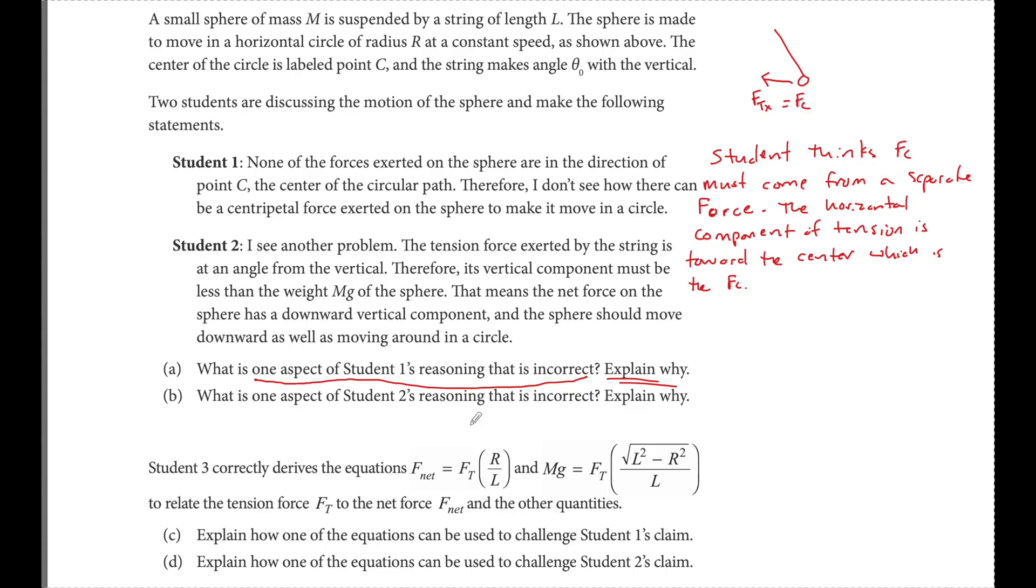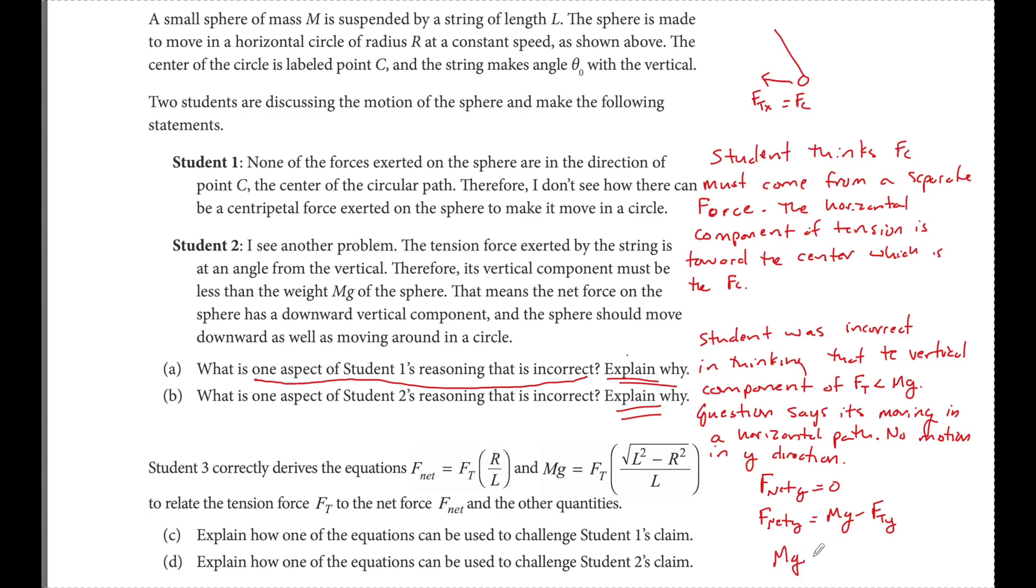In the second part, what did the student say that was incorrect? That the vertical component had to be less than MG. Now I need to explain why that is incorrect. It's said that it's moving in a horizontal path. So if that's the case, there's no up and down motion, no motion in the Y direction. That means that F net in the Y direction equals zero. And the forces that are acting in this direction, F net in the Y direction, is going to be equal to MG minus the force of tension's Y component. So we actually see that MG must be equal to the vertical component of tension.